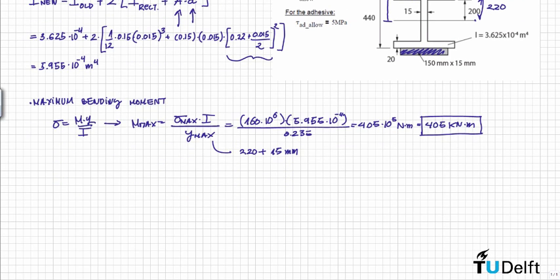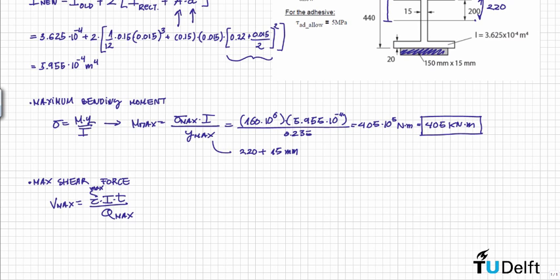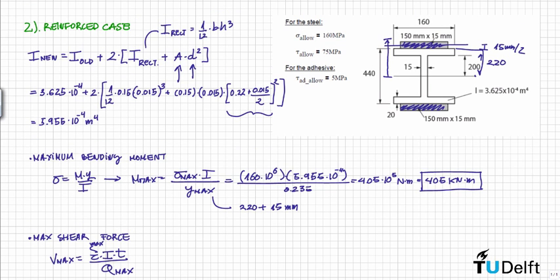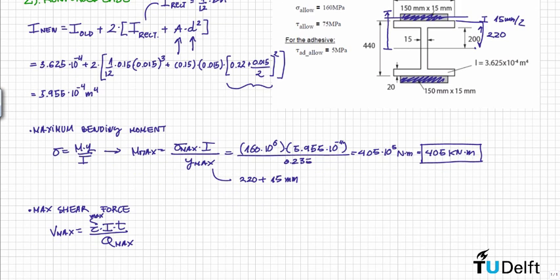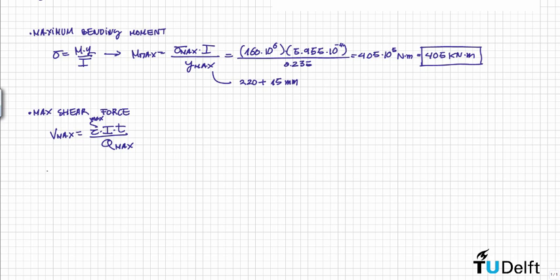Now we need to determine the maximum shear force for the reinforced beam. V_max equals tau times I times t divided by Q. However, we have two critical cases to consider: we don't know if the whole structure fails first or if the adhesive fails first. So we need to calculate the maximum shear force for the adhesive and for the beam material separately, then determine which is most critical.